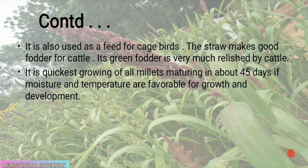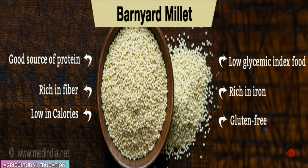Barnyard millet is the quickest growing of all millets, maturing in about 45 days if moisture and temperature are favorable. It is a good source of protein, rich in fiber, low in calories, and has a low glycemic index. It is also rich in iron and is gluten free.